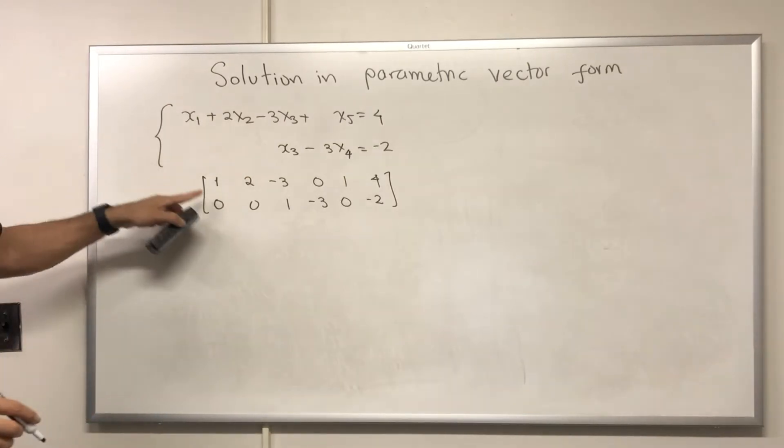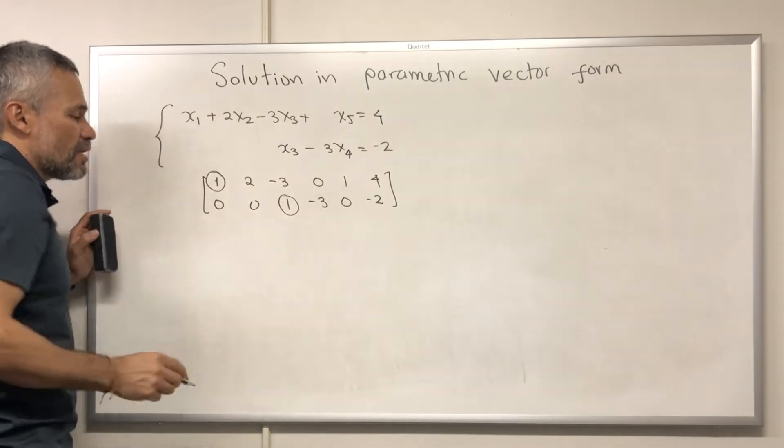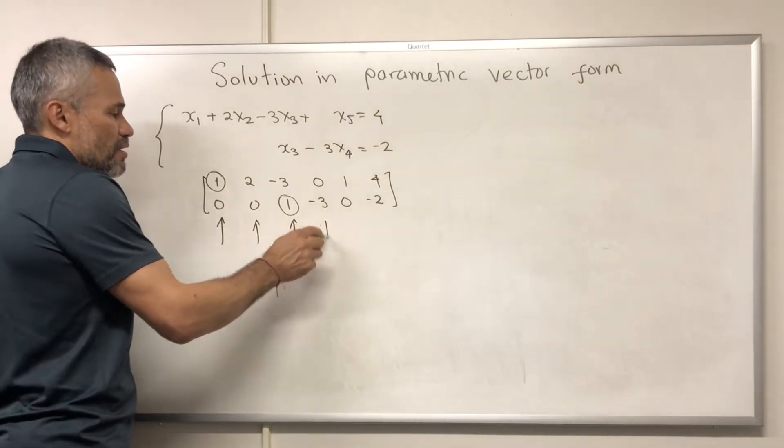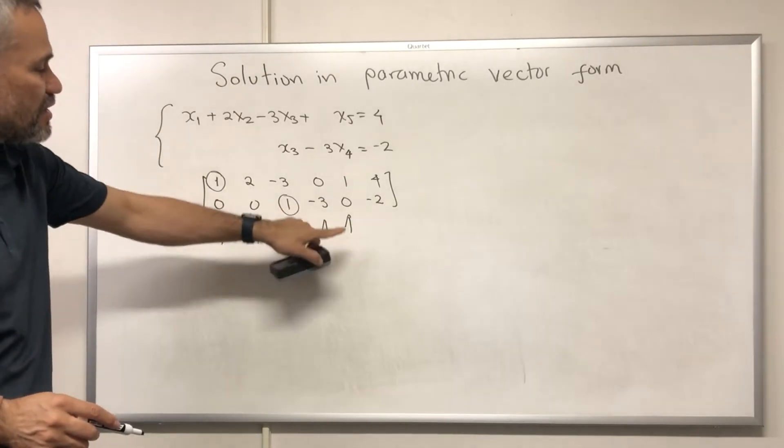We notice that this matrix is in echelon form, then we can decide where the pivots are. And we know that these columns, 1, 2, 3, 4, 5, they correspond with the variables x1, x2, x3, x4, and x5.